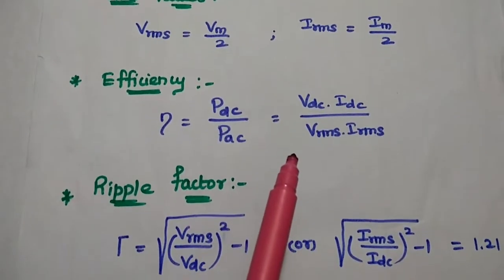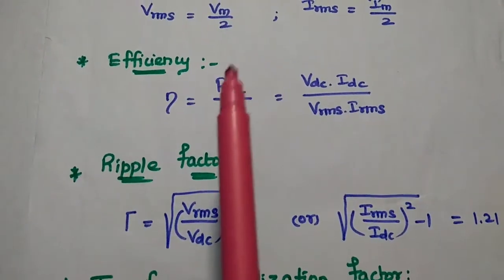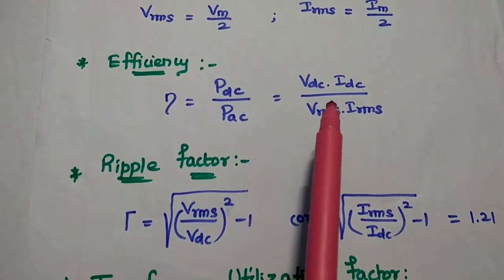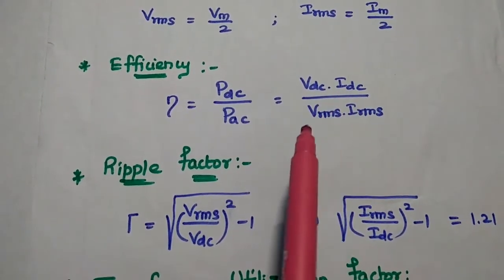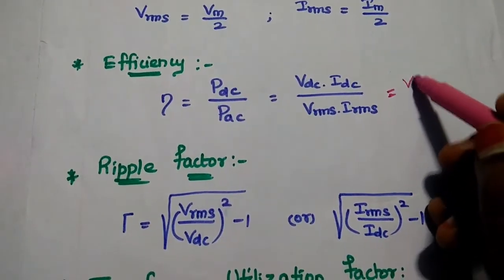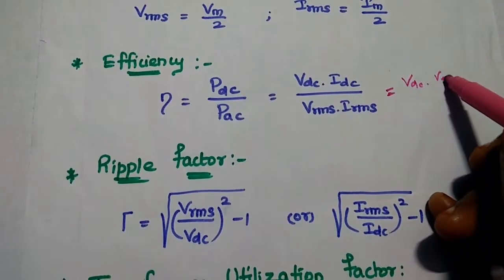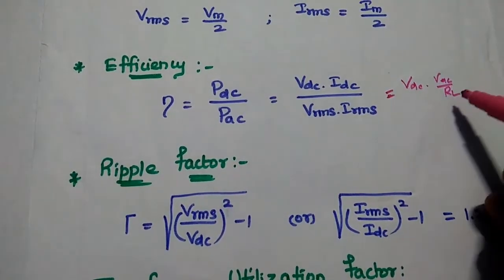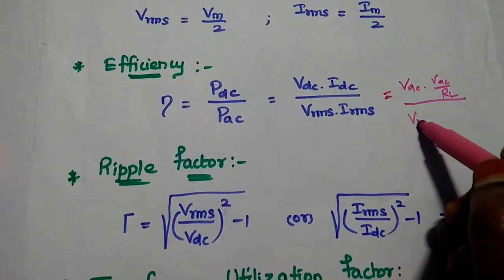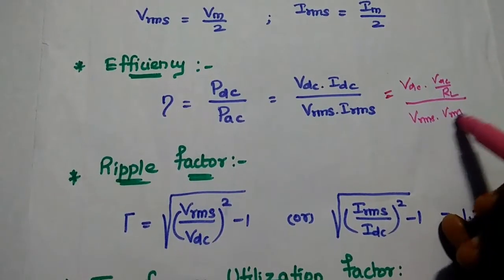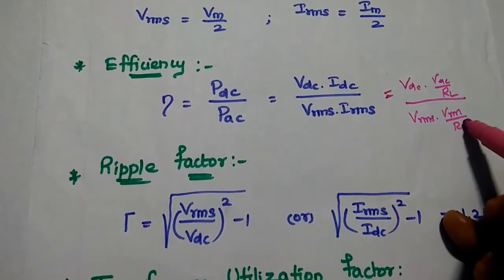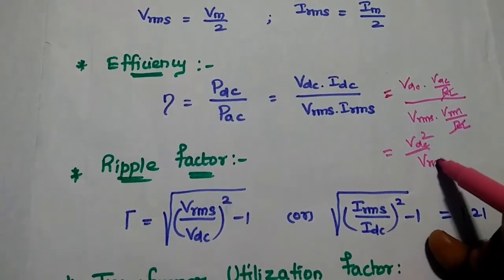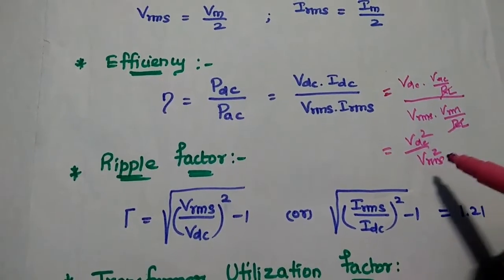Efficiency is defined as the ratio of DC output power to AC input power. It can be calculated using the formula: Vdc × Idc / (Vrms × Irms). Substituting Idc = Vdc/RL and Irms = Vrms/RL, the RL terms cancel, giving efficiency = Vdc² / Vrms².